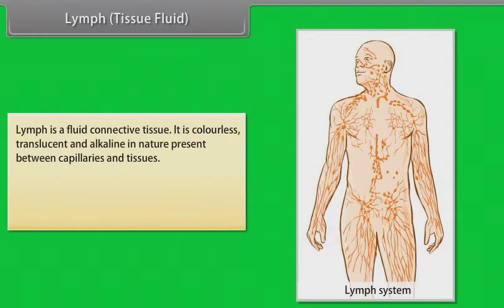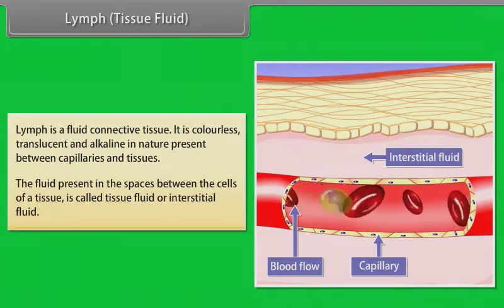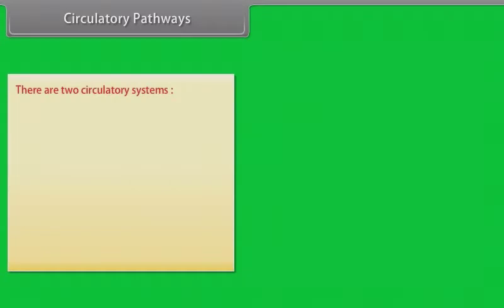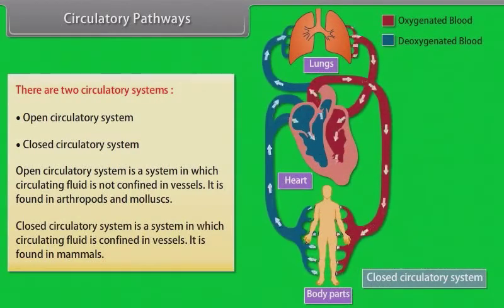Lymph is a fluid connective tissue. It is colorless, translucent, and alkaline in nature, present between capillaries and tissues. The fluid present in the spaces between the cells of a tissue is called tissue fluid or interstitial fluid. There are two circulatory systems: open circulatory system and closed circulatory system. In an open circulatory system, the circulating fluid is not confined in vessels and is found in arthropods and mollusks. In a closed circulatory system, the circulating fluid is confined in vessels and is found in mammals.